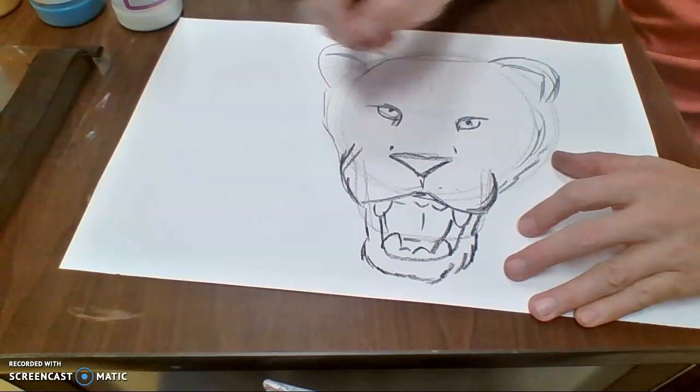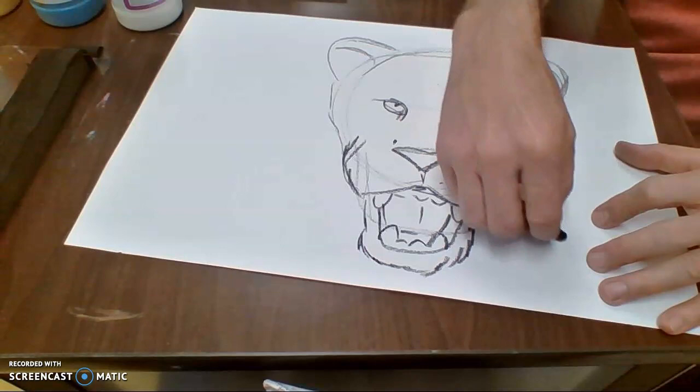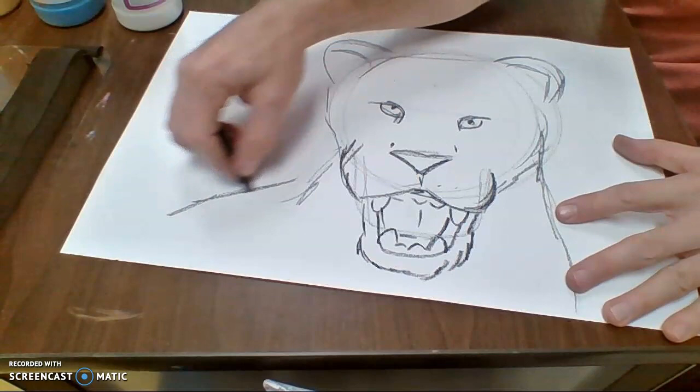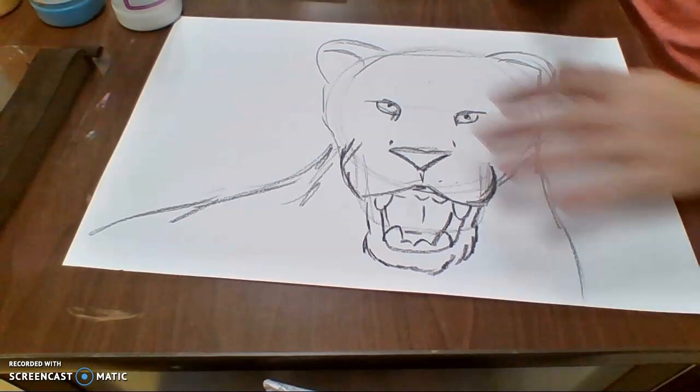And then the big old neck that he's going to have. So, let's get a big old neck dropping down over here. Big old body. And I think I am going to draw a piece of the body coming out this way.